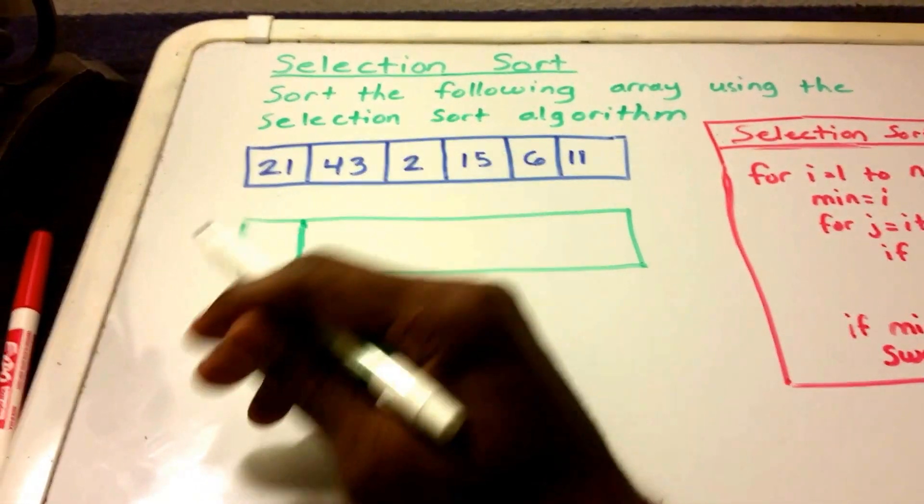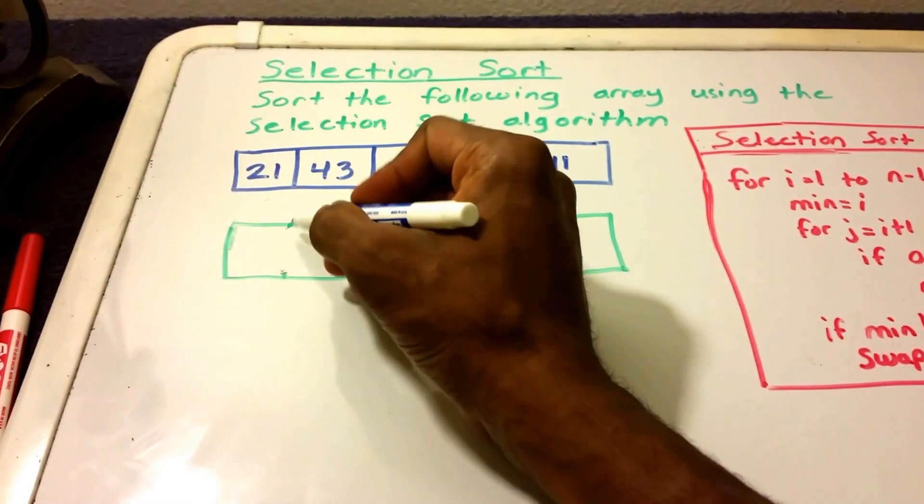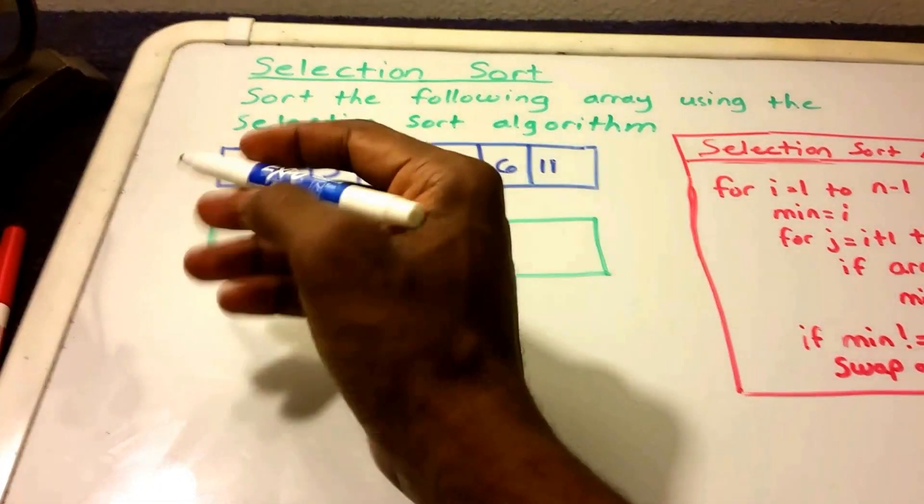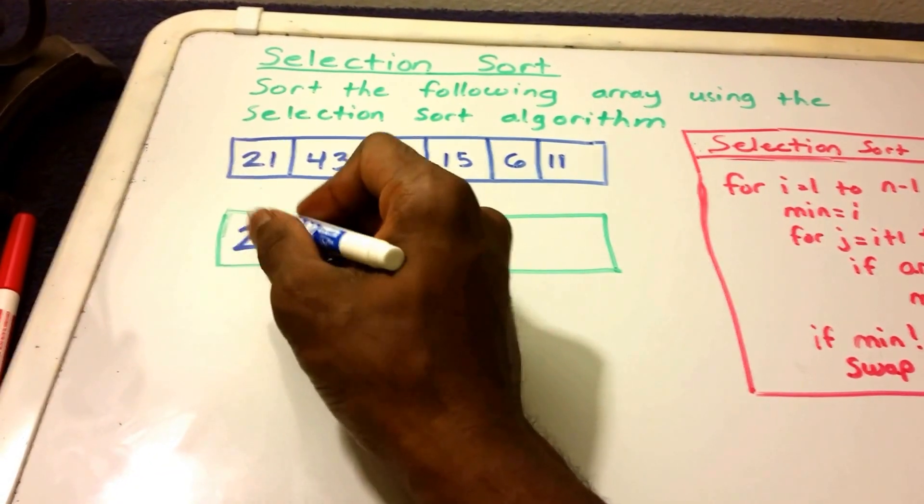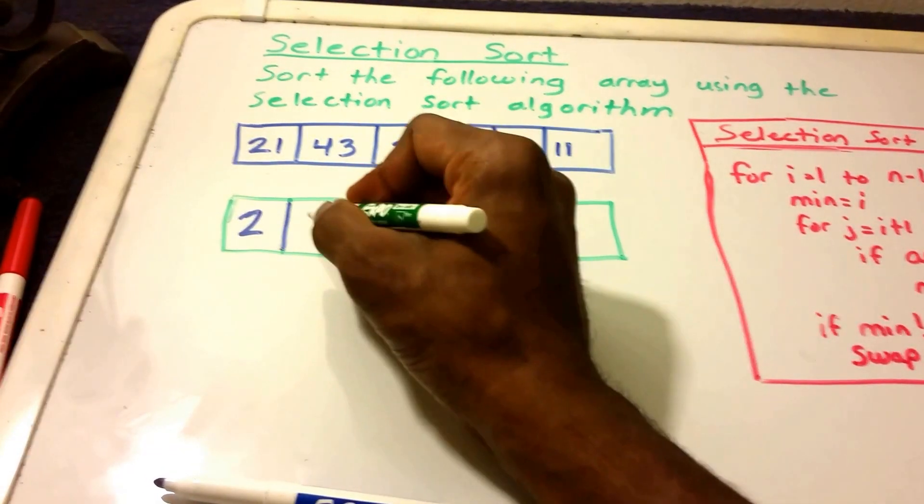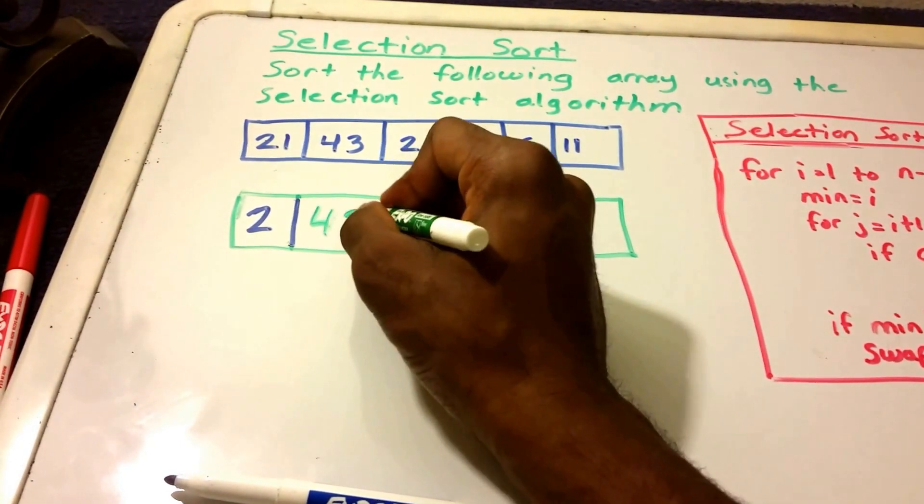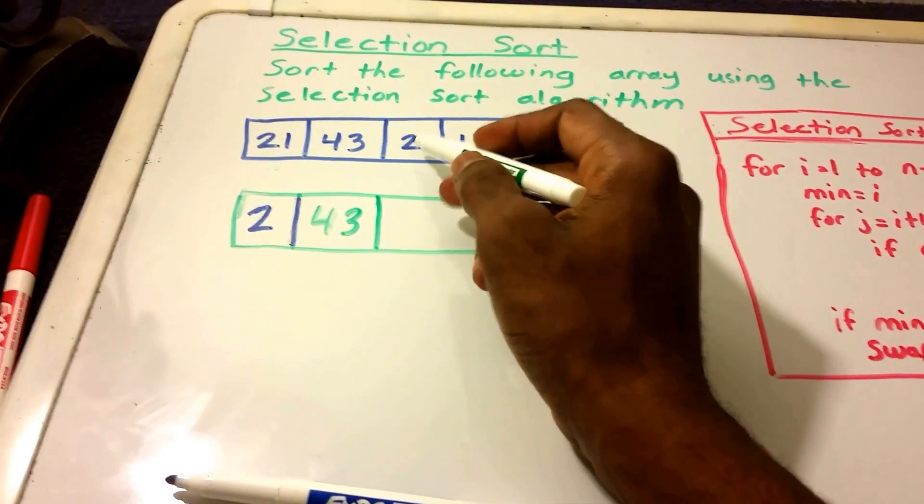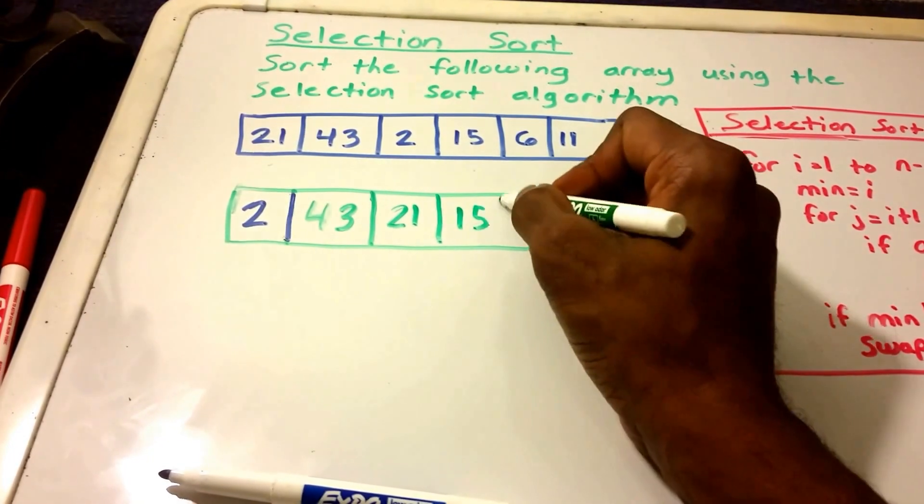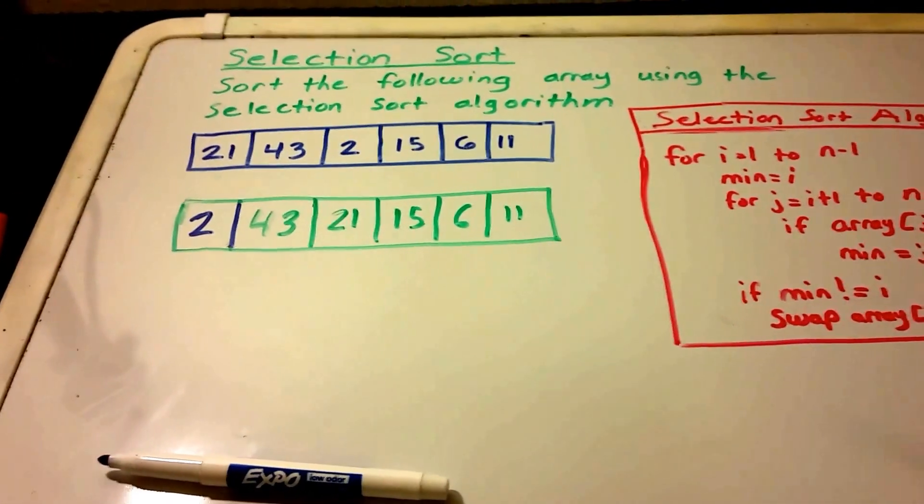I'm going to rewrite this here. Perfect. So now we're swapped. Actually, I'm going to use a blue marker here, because we'll never go back here again, because this is the first part of the loop here, of the outer loop. So this is sorted now. That 2 is sorted. And then we have 43. And now where we had the position 2, we swapped it, so it's 21. And then we have all the rest of the elements, 15, 6, and 11. So that's what our array looks like now, after the first pass.